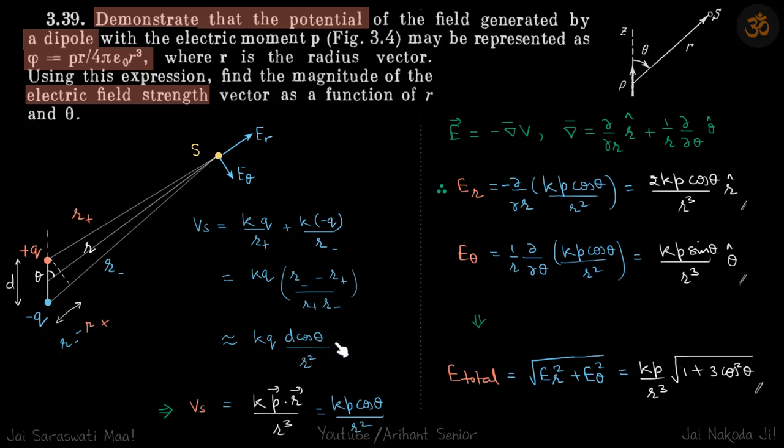We can write this as qd cos θ times r divided by r. This will be p·r, and divide by r so that r will add into this and this will become r³. Or we can in scalar form write it like this.